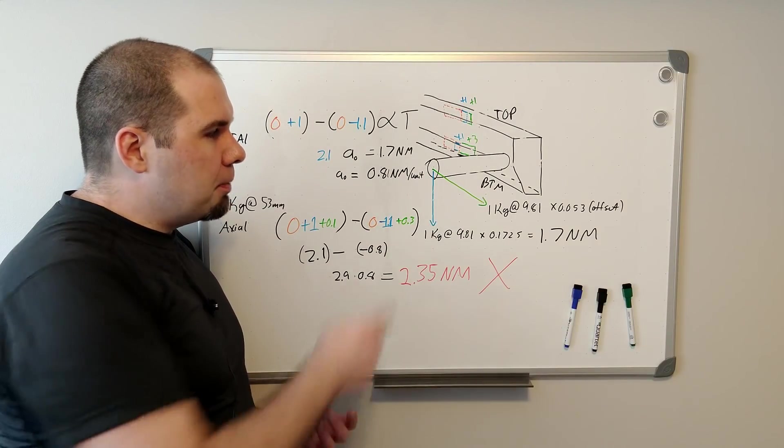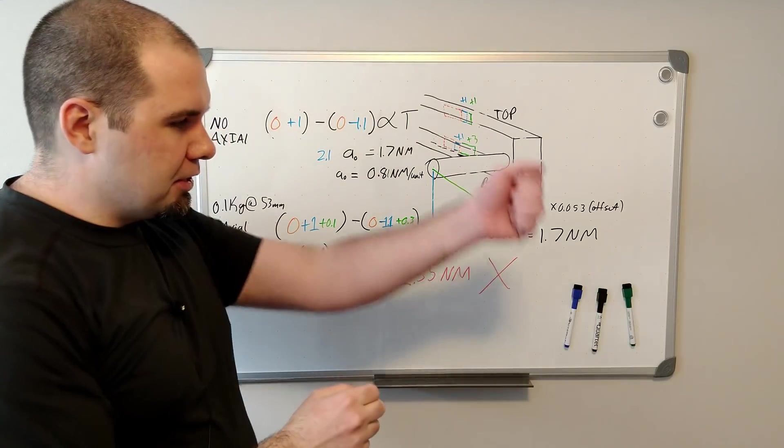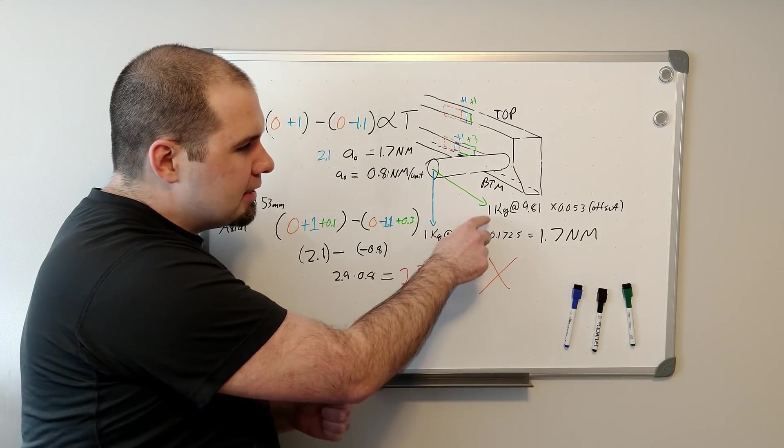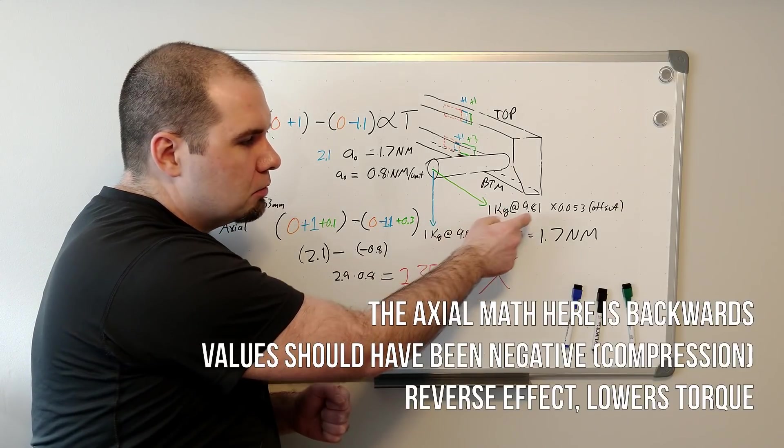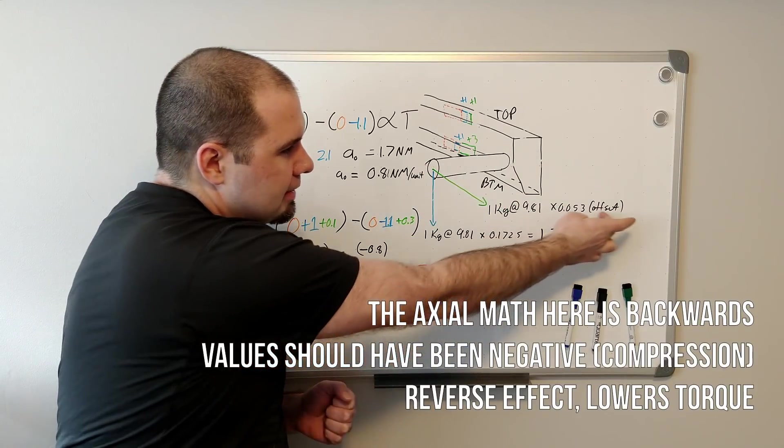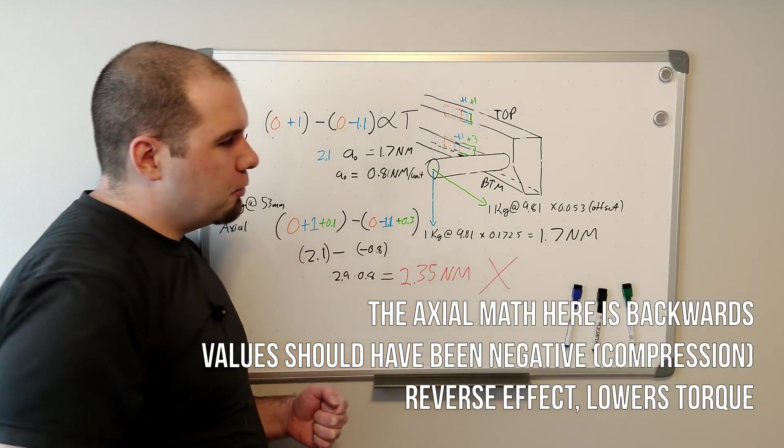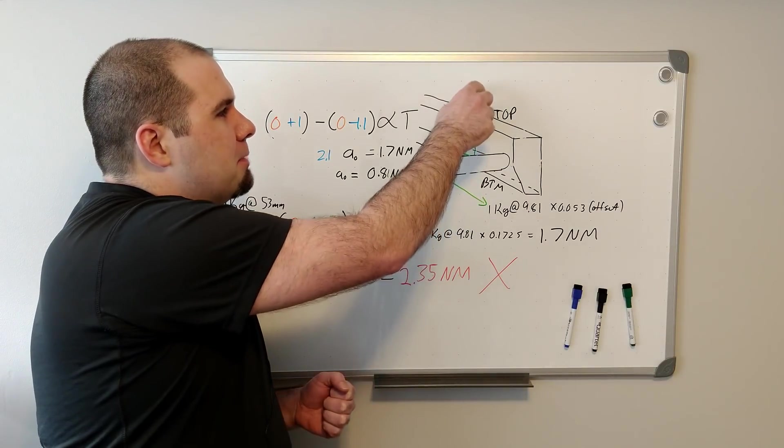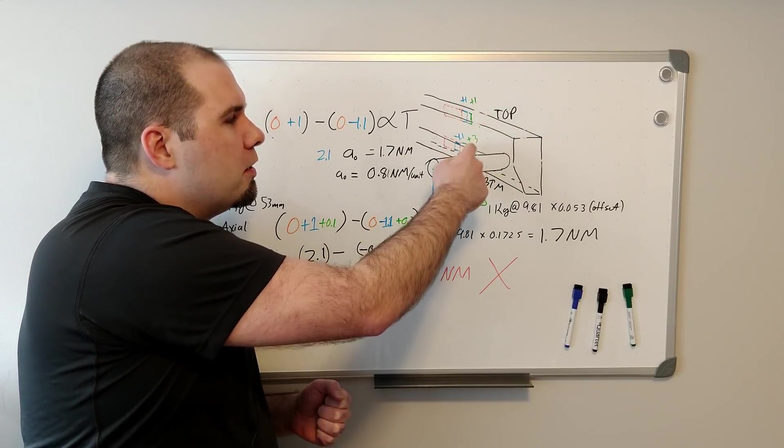But now we apply a force in the axial direction, along the length of the crank. And let's say when we did that, we used 1 kilo. It's not a torque really, although you can look at this offset. 9.81 meters per second for gravity, so we know the newtons. And we probably get 1 and 3.